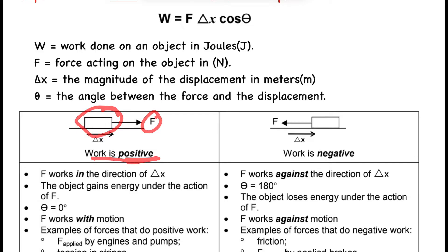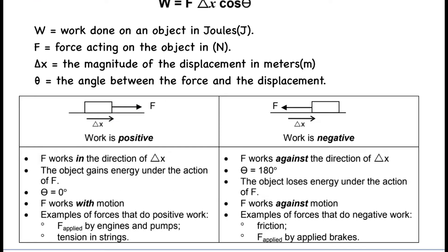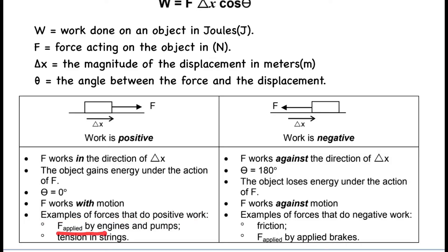When the force and displacement are in the same direction, the work done on the object is positive. The force works in the direction of the displacement, so the object gains energy. When the angle between them is zero degrees, the work is positive. Examples of forces that do positive work include the applied force, force by an engine, and force by a pump.